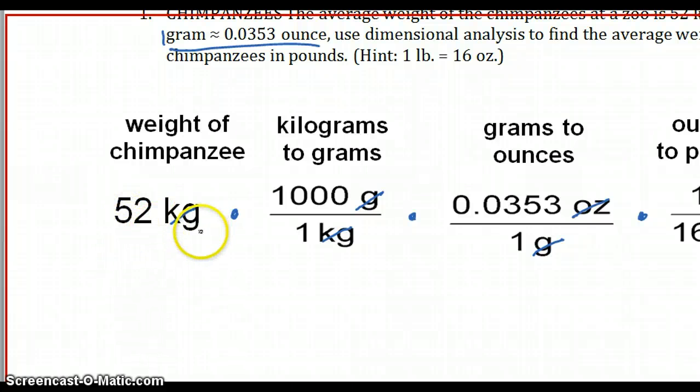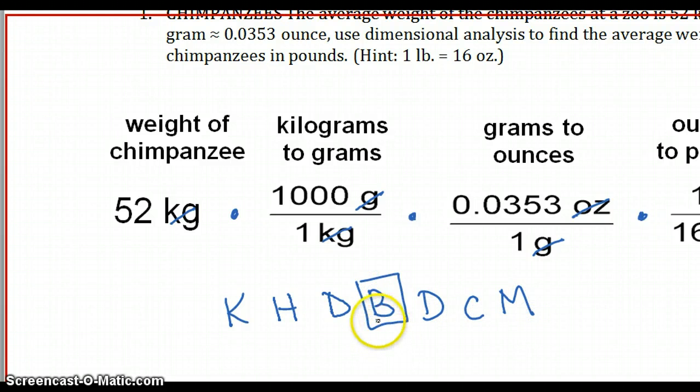One gram is about 0.0353 ounces. We are going to have to cancel kilograms, and we can convert kilograms to grams, and then we're going to have to convert grams to ounces, and then ultimately convert ounces to pounds. They told us it was 52 kilograms. From kilo to grams, there's one, two, three, so that makes three zeros. There's a thousand grams in one kilogram. And they gave us the ounces to grams, 0.0353. And there's 16 ounces in a pound.